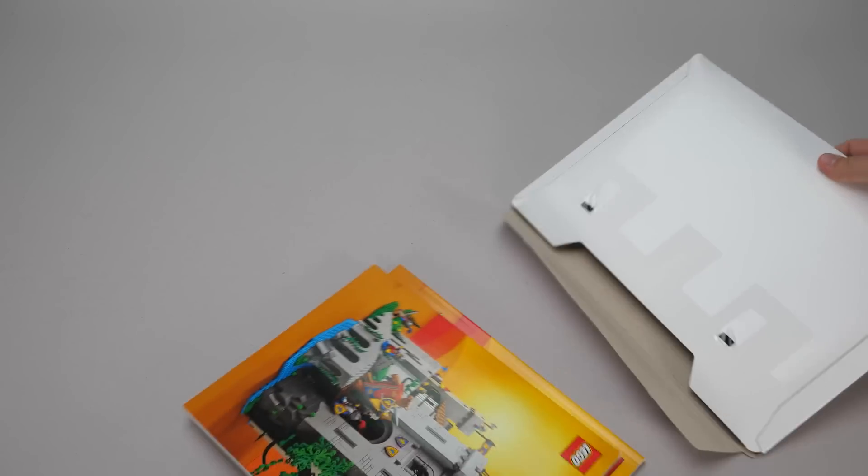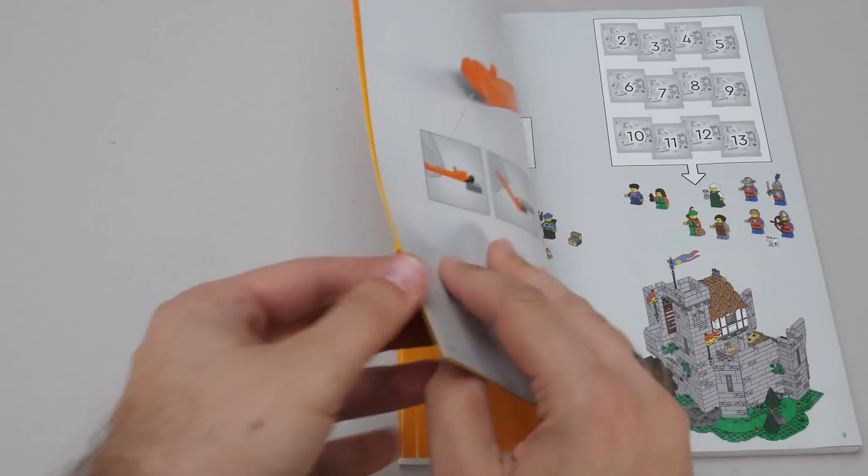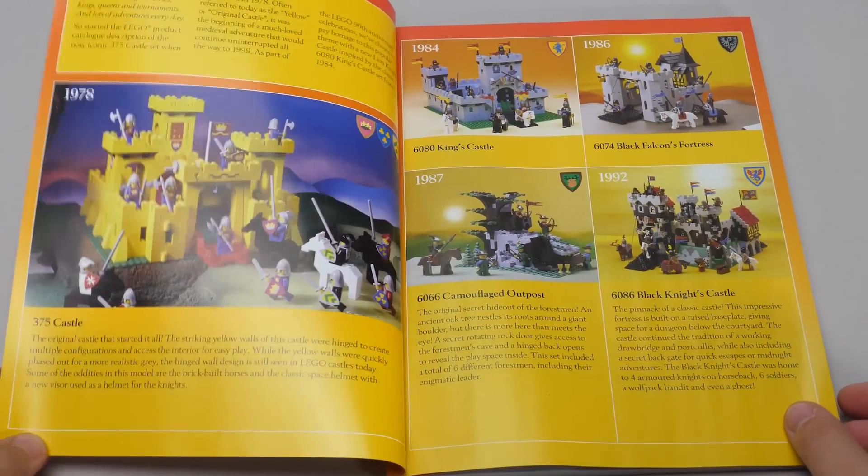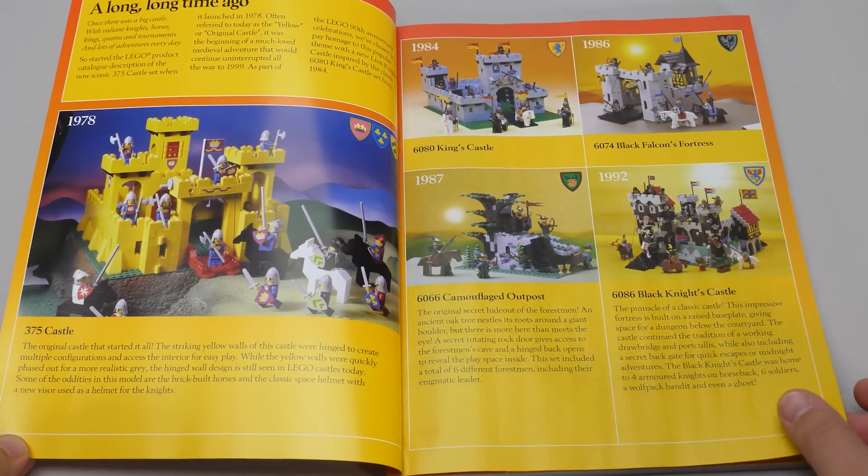So we get not one but two manuals, they seem to be almost identical apart from the numbering. Thankfully we get some extra information at the beginning this time, we get a little history lesson of the LEGO Castle sets.